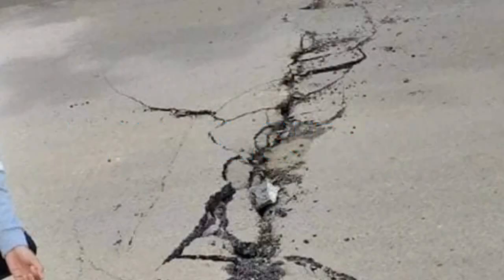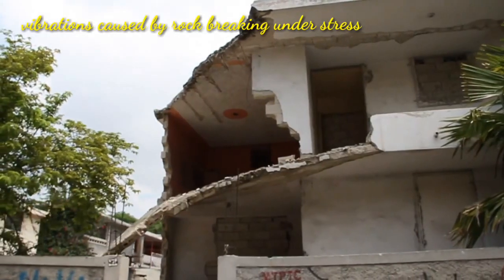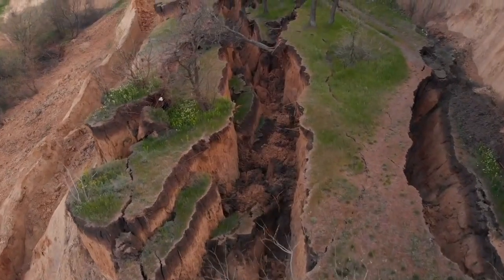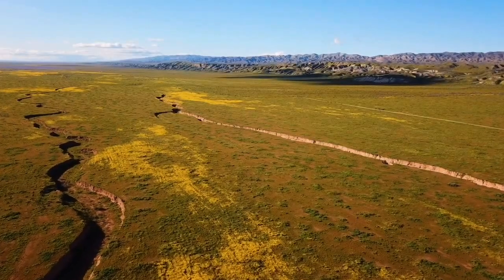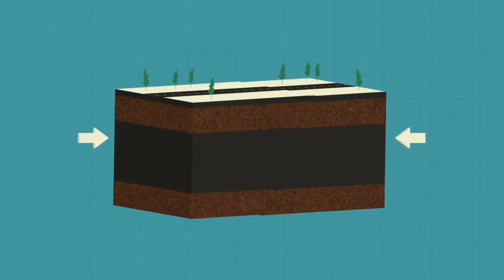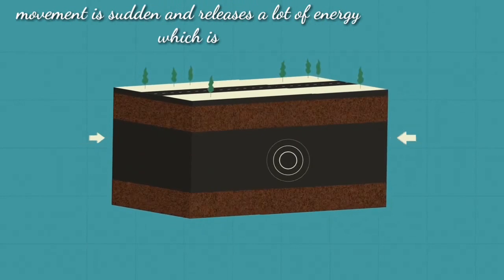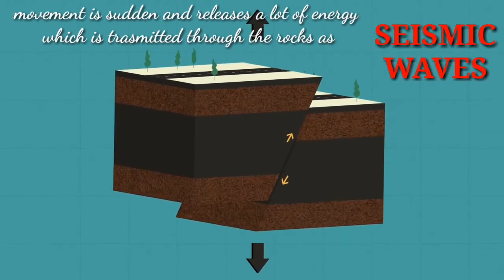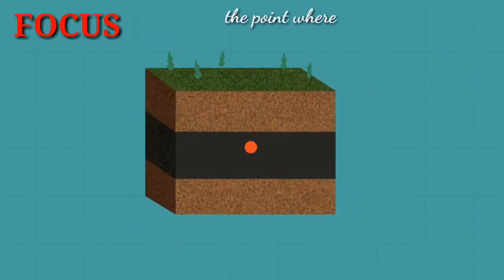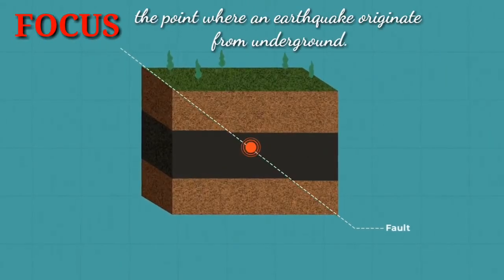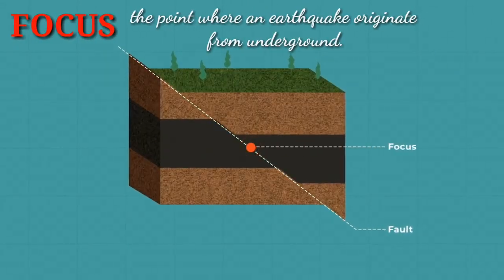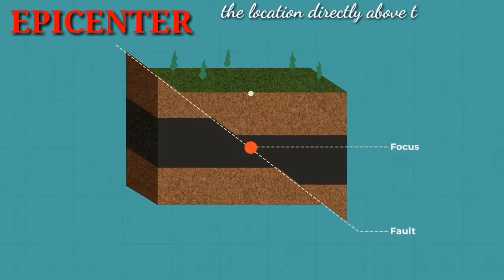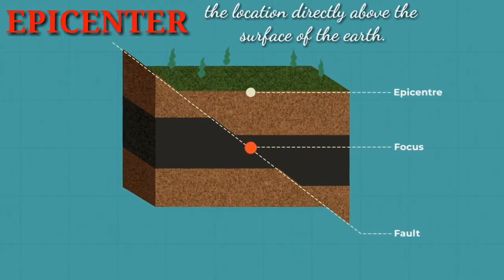Earthquakes are vibrations caused by rock breaking under stress. This vibration travels and reaches the surface of the Earth. This movement is sudden and releases a lot of energy which is transmitted through rocks as seismic waves. The point where an earthquake originates from underground is called focus. The location directly above the surface of the Earth is called the epicenter.